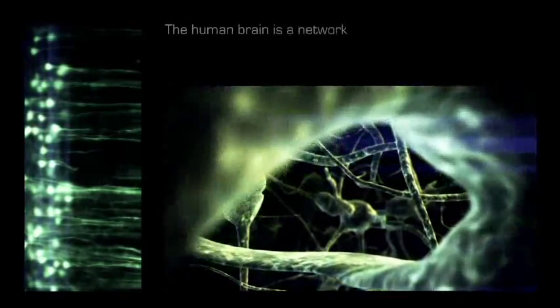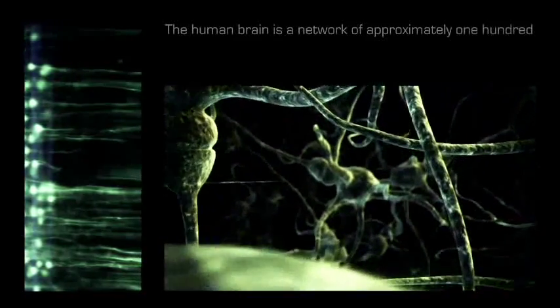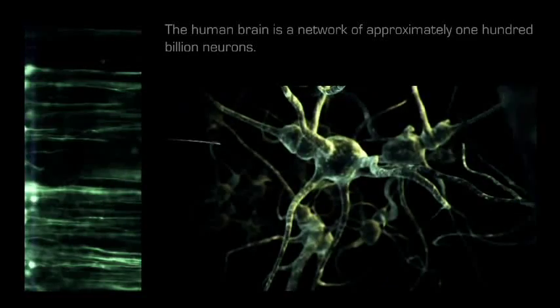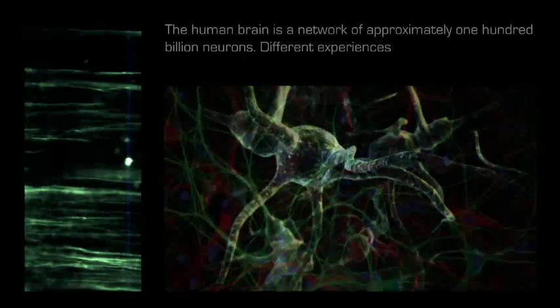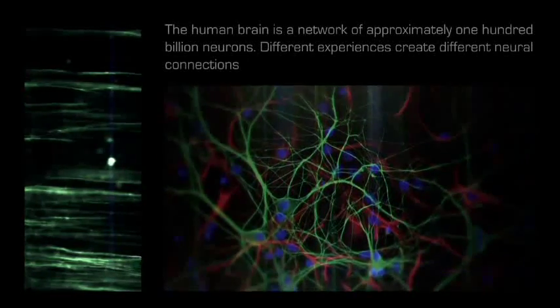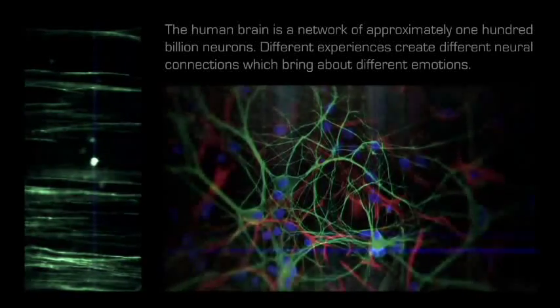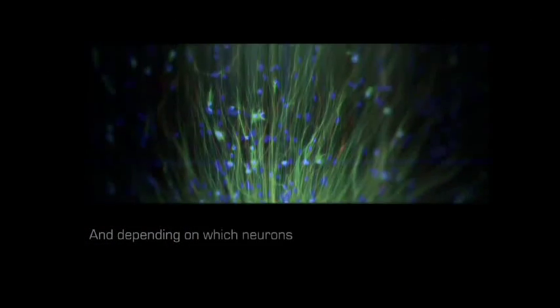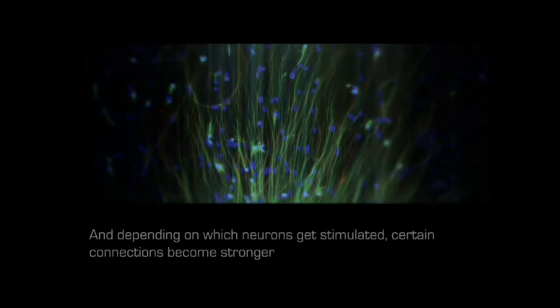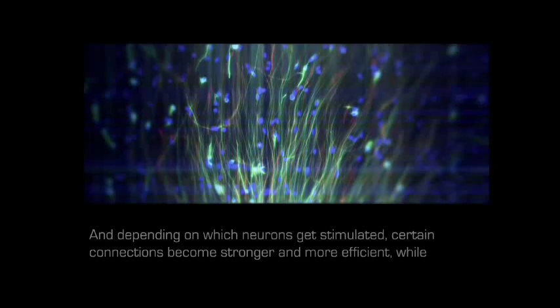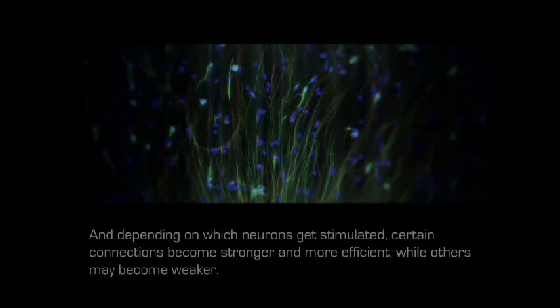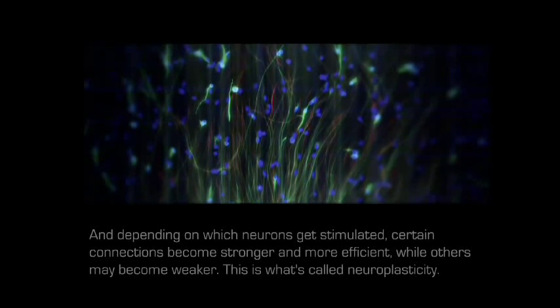The human brain is a network of approximately 100 billion neurons. Different experiences create different neural connections which bring about different emotions. Depending on which neurons get stimulated, certain connections become stronger and more efficient, while others may become weaker. This is what's called neuroplasticity.